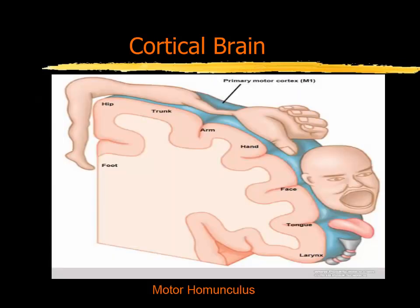Here is a depiction of Mr. Motor Homunculus, with a representation of the area of the cortex responsible for the control of the different body parts. As you can see, there's an inordinate amount of cortex devoted to control of the hand, face, and tongue muscles.